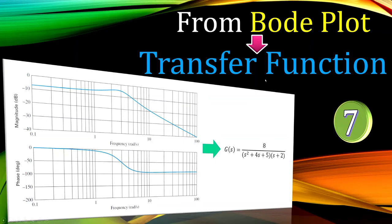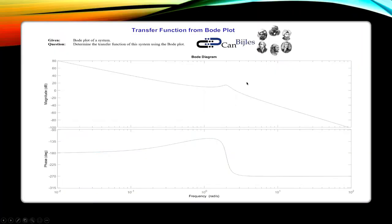Hi everyone, welcome to a new video about control systems topics. We continue with the subject of Bode plot to transfer function, and this is example number seven. We continue with a Bode plot having a gain peaking, and this example is a little bit more complicated than the previous two examples that also had a gain peaking. The following transfer function is given, and you can see there is a gain peaking here, and the gain is not constant for very low frequencies.